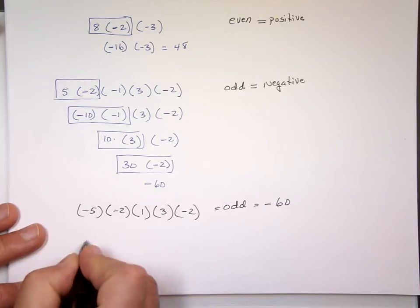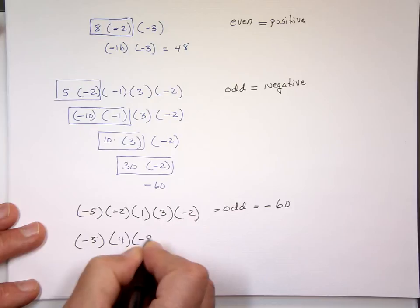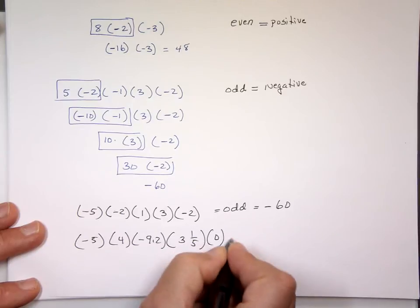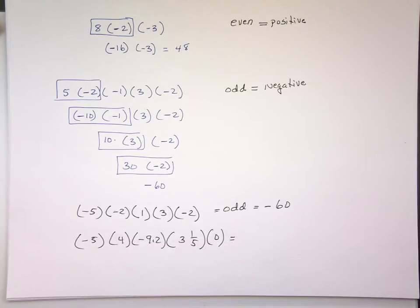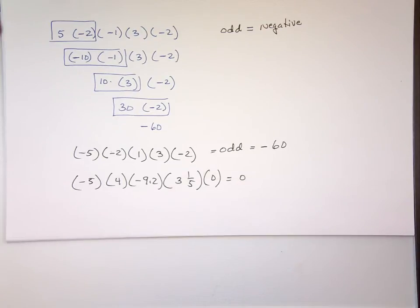Or I might give you one like this where one of the numbers is zero. Once one of the numbers is zero, you're done — your answer is zero. Don't waste your time multiplying the numbers; just go ahead and write zero.